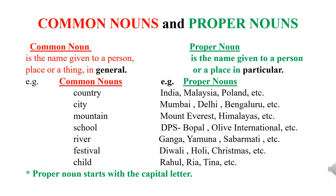Child — child is a common noun. But when we say Rahul, Ria, Tina, it means we are talking about the particular children. So these are proper nouns. I think it must be clear to you that common noun is the name given to a person, place or a thing in general, and proper noun is the name given to a person or a place in particular. Children, you need to remember: proper noun starts with a capital letter.